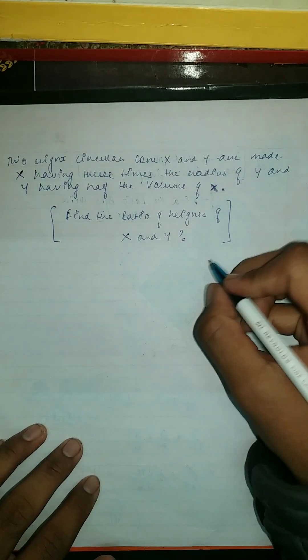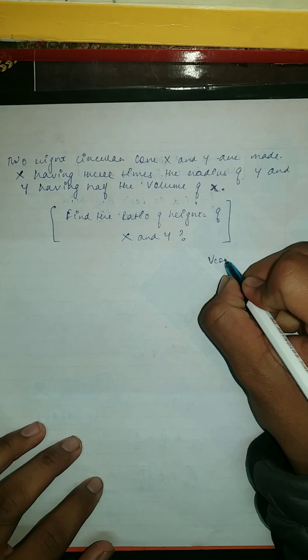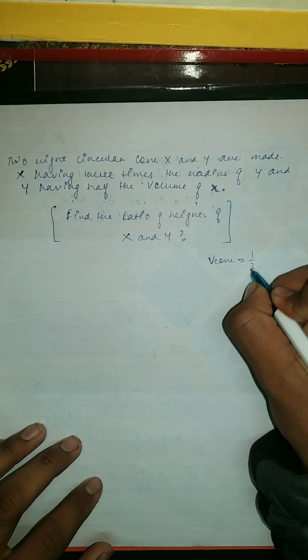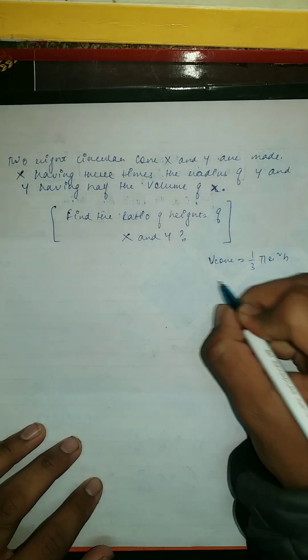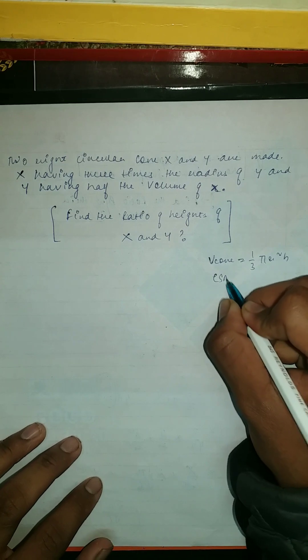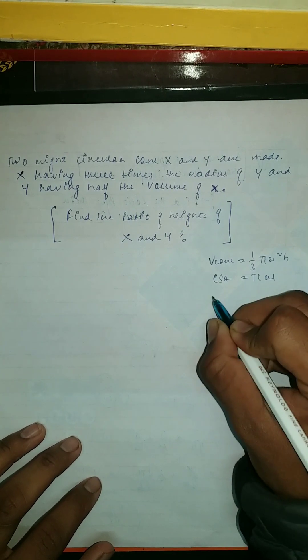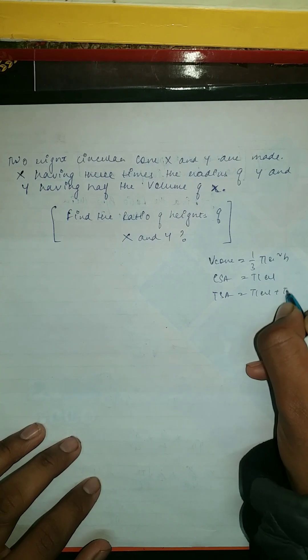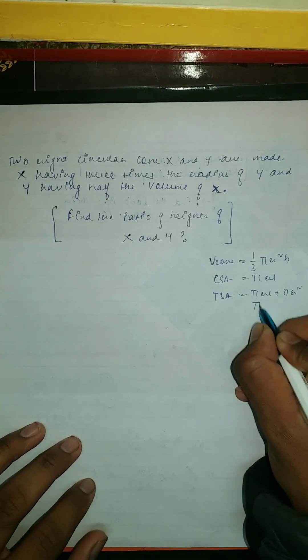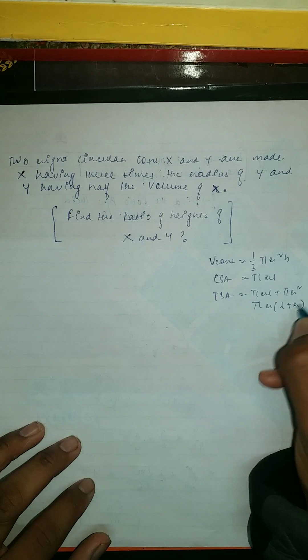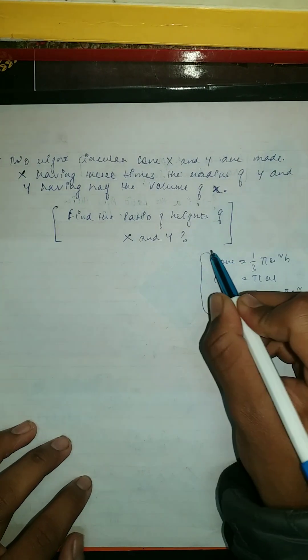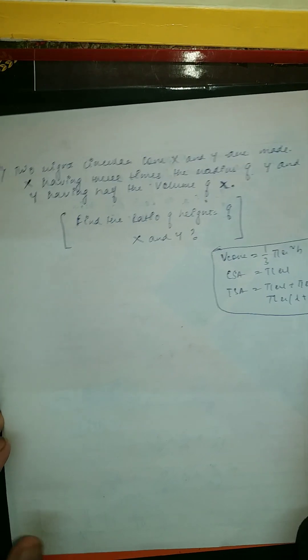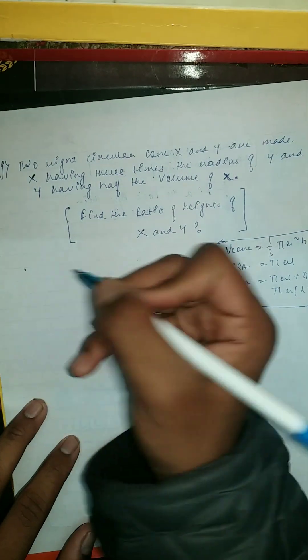Your volume of cone is 1/3 π r² h. Your CSA is π rl and your TSA is π rl plus π r² or we can write this as π r(l + r). We're going to use this.